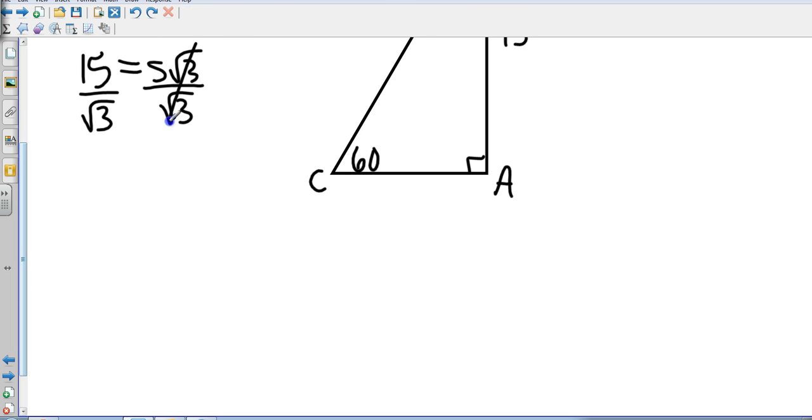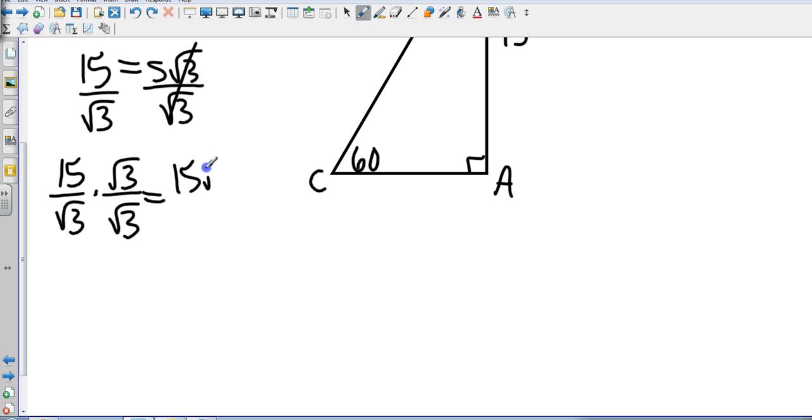Now remember, we can't have a square root of 3 as our denominator, so I'm going to break this down here, multiply top and bottom by square root of 3. And that's 15 square roots of 3, all over square root of 9, which is 3.